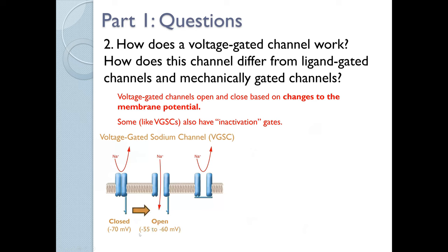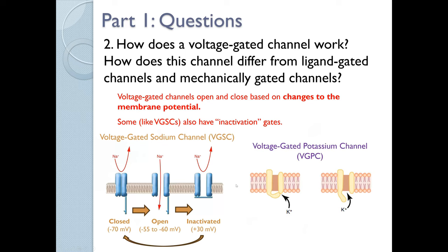Voltage-gated sodium channels open when the membrane potential depolarizes to negative 50 to negative 60 millivolts, allowing sodium ions to cross the membrane. They become inactivated at positive 30 millivolts, and when inactivated, sodium cannot cross — just like when it's closed. From the inactivated state, these channels must return to the closed state before they can reopen, going through the series: closed, open, inactivated. Voltage-gated potassium channels only have two states: closed at resting membrane potential of negative 70 millivolts, and open at positive 30 millivolts. When open, they allow potassium ions to leave the cell, then return to being closed.